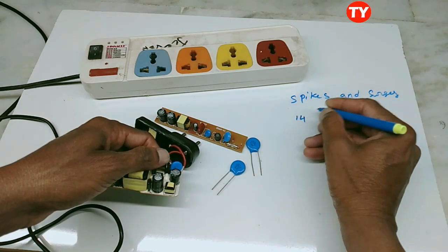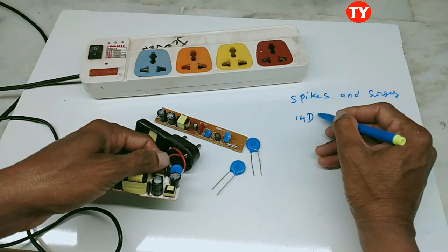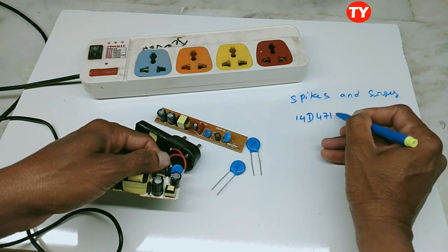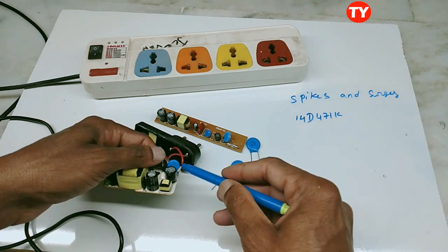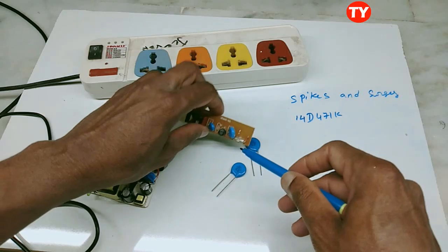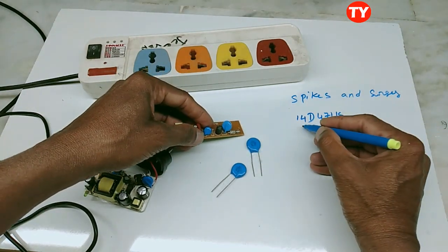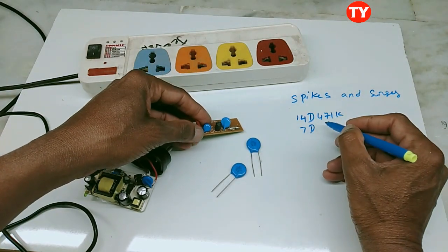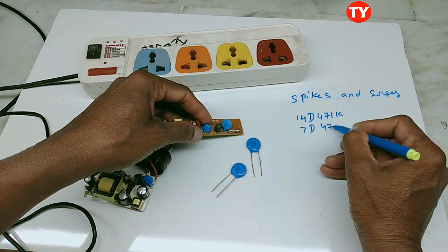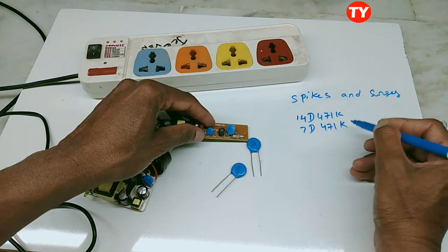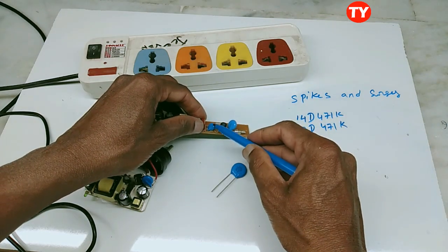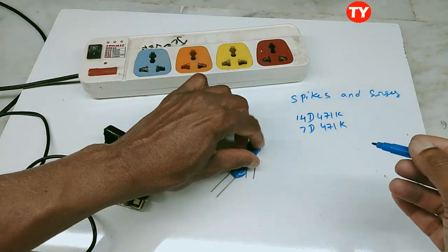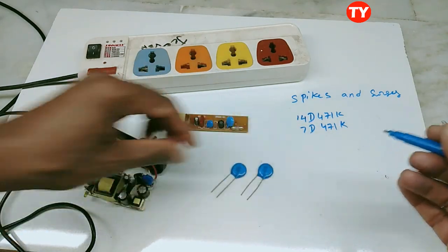MOV allows the current to pass through it to ground, acting as a barrier. Here is 14D471K varistor used in circuits for surge protection.